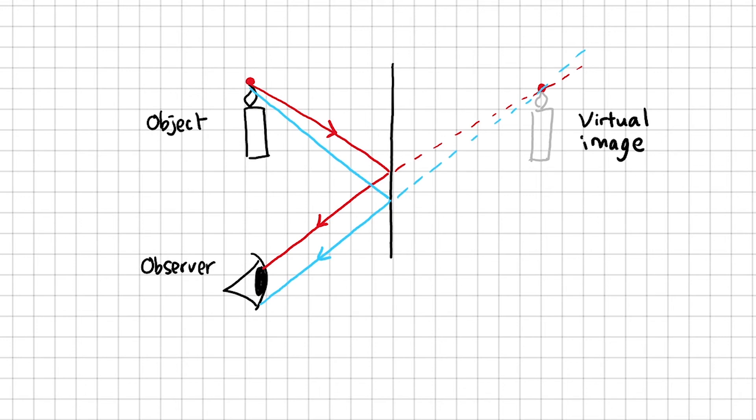So using the idea of reflection in a ray diagram, we once again have shown that the virtual image is the same distance behind the mirror as the object is in front of the mirror.